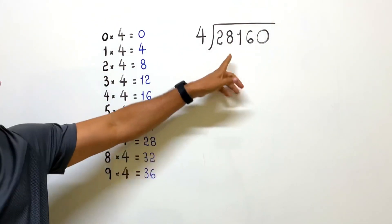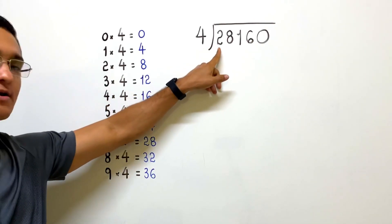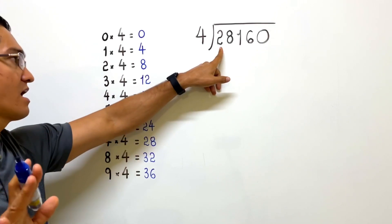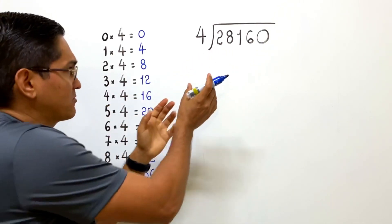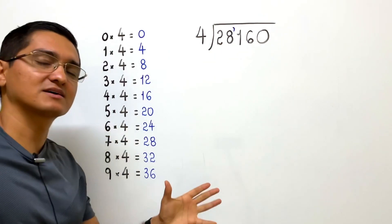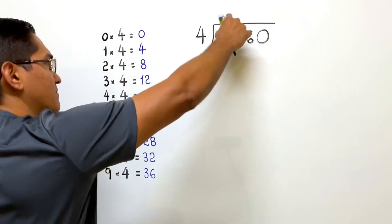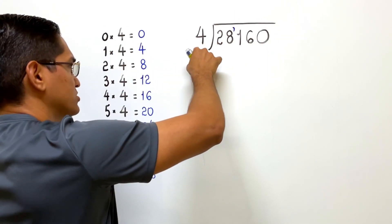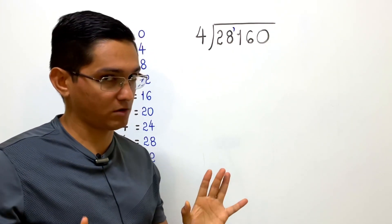We start by taking a look at this first digit here. Since 2 is less than 4, I do not start just yet. I gather it with another digit. Yes, we group it with the next digit. Now we have 28. Okay, I can ask the question now. What number do I multiply by 4 to get 28 or almost 28, but not more than 28?